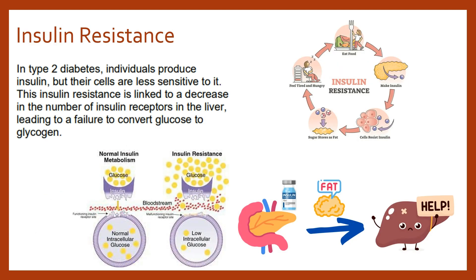The other hallmark of type 2 diabetes — with type 1 they cannot produce insulin at all, but in type 2, even though insulin is still being produced by the pancreas, the cells are much less sensitive to it. Overproduction over time due to chronically high glucose levels has caused this fatigue — it's insulin resistance — so a decrease in the number of insulin receptors, particularly on the liver.